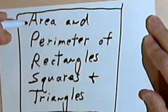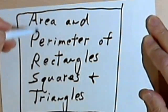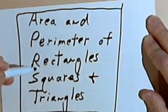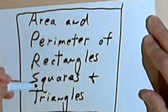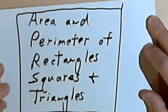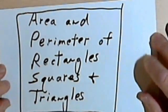This video is going to be about finding the area and perimeter of rectangles, squares, and triangles. So let's start with some definitions.